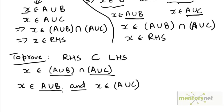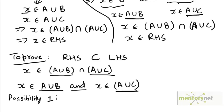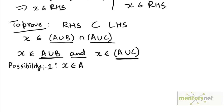Now, one of the ways in which x could belong to both of these sets is by being an element of A, because if x is an element of A, then it explains why x is an element of A union B as well as A union C. So possibility one is that x is an element of A, because of which it belongs to both of these sets.